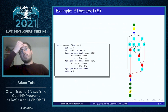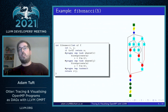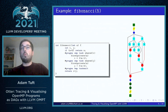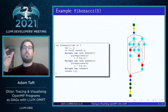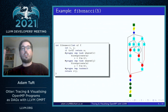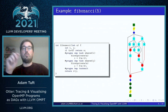Just to give an example of the kind of visualizations that the LLVM OpenMP Tools Interface has allowed us to create with Otter: we've got the same example of a Fibonacci program here whose purpose is to calculate the nth Fibonacci number. This is done in a recursive way using recursive task creation.